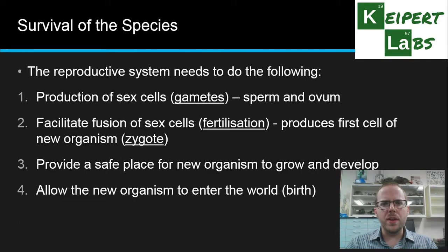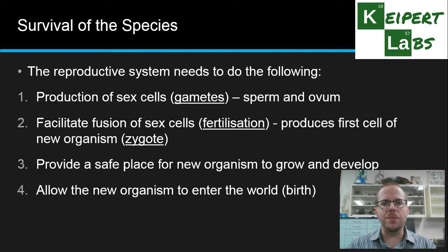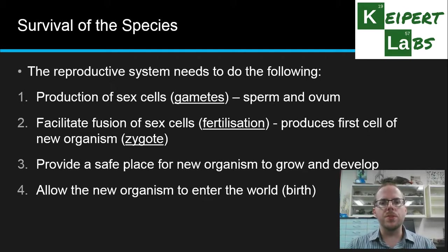The reproductive system's purpose is the survival of our species — we want to be able to produce new humans, new generations going into the future. So the reproductive system needs to do the following things: firstly, produce sex cells, or what we call gametes. For men it's sperm; for women it's the ovum, which is Latin for egg. We also need to facilitate the fusion or joining of these two sex cells — we call this fertilisation — which produces the first cell of the new organism, the zygote. The zygote will divide and develop to become the new human being, the baby.